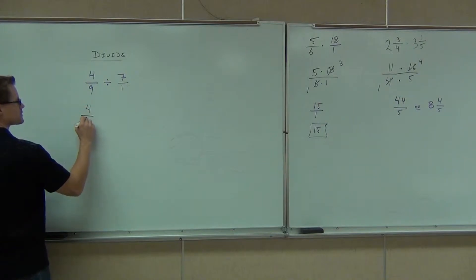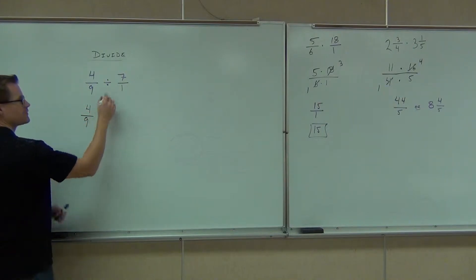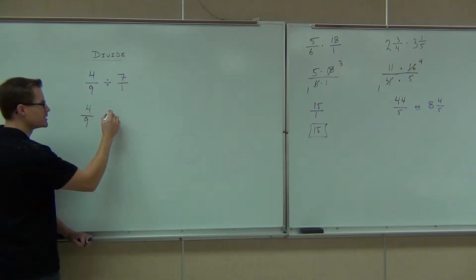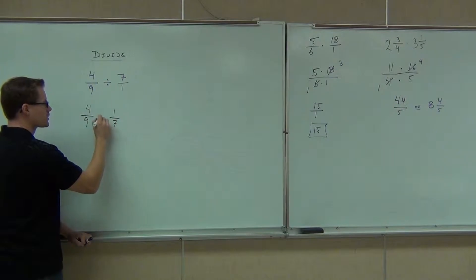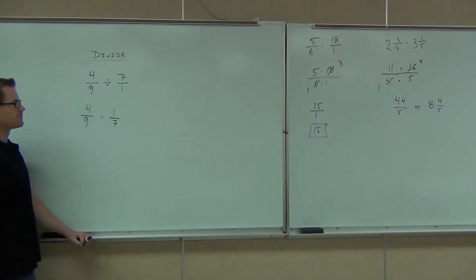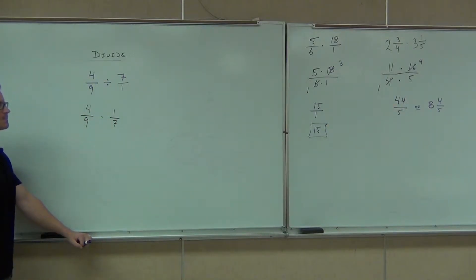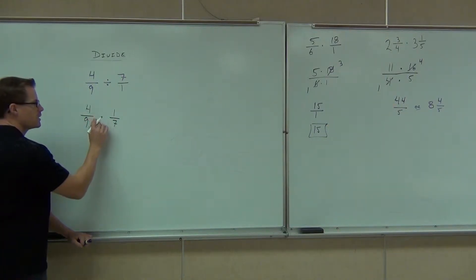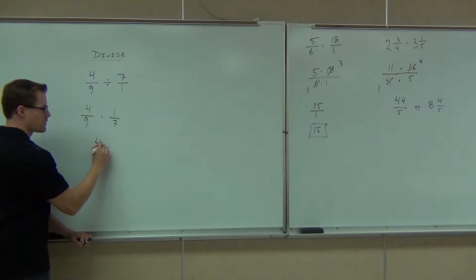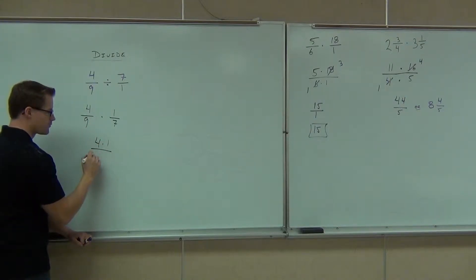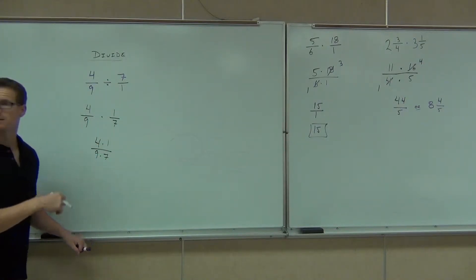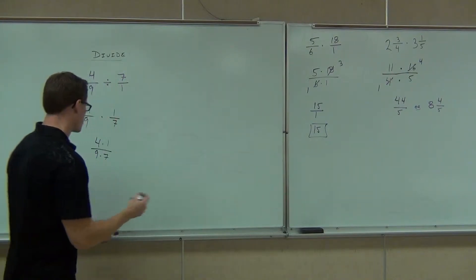So we get four-ninths. Instead of seven over one, how much do we get? We're going to multiply. If we multiply, I know that we extend our line or rewrite the fraction. Four times one, nine times seven. Does anything simplify in this case?